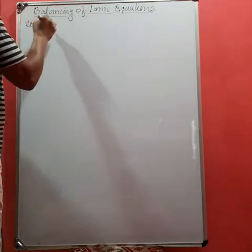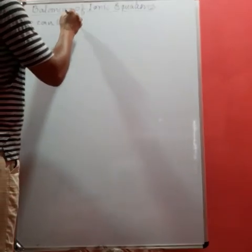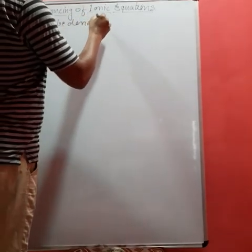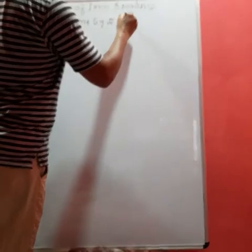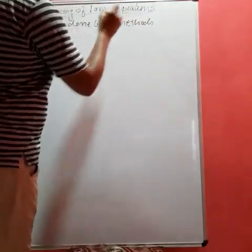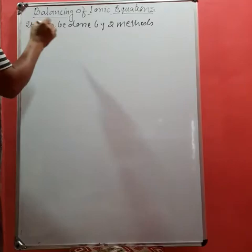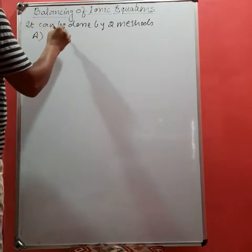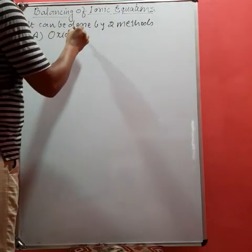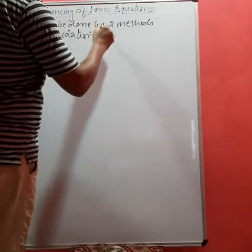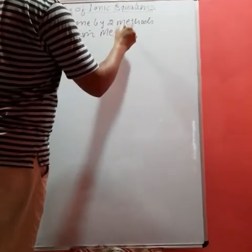we can balance ionic equations. Student, it can be done by two methods. The first one is called the oxidation method.